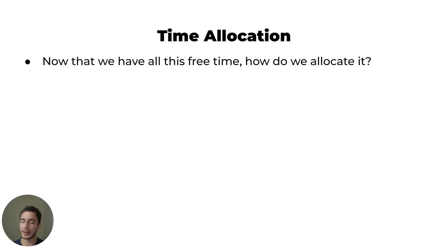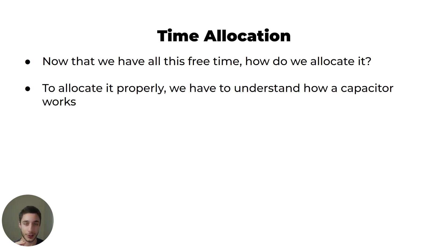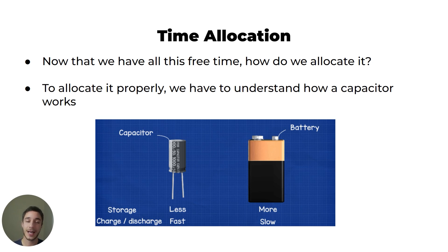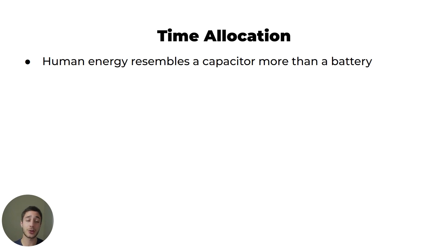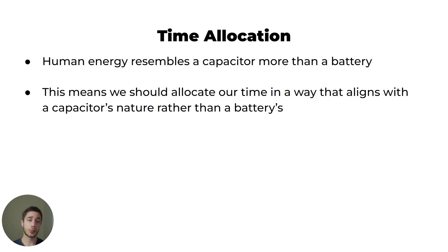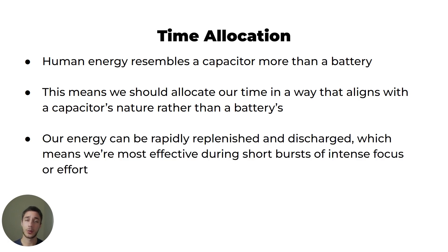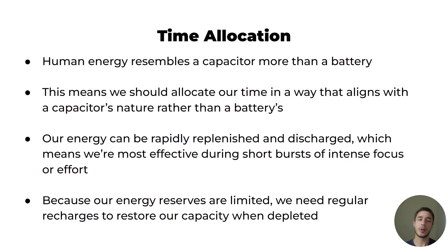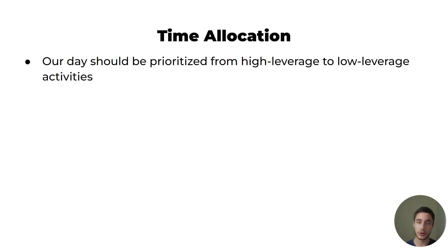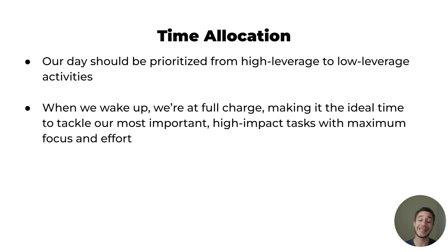Now that we have free time, we need to know how to allocate it properly. To do that, we have to understand how a capacitor works. Unlike a battery, a capacitor has less storage but charges and discharges much faster. Human energy actually resembles a capacitor more than a battery, meaning we're most effective during short bursts of intense focus. We should allocate our time aligned with the capacitor's nature — when we wake up we're at full charge, making it the ideal time to tackle our most important, high-impact tasks.